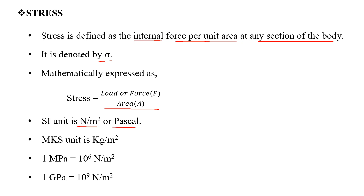In MKS system, the unit is kilogram per meter square. This is the unit conversion: 1 Megapascal is 10 raised to 6 Newton per meter square, and 1 Gigapascal is 10 raised to 9 Newton per meter square.